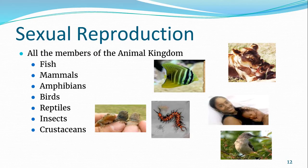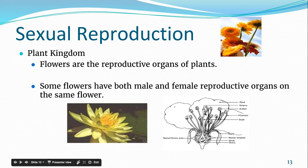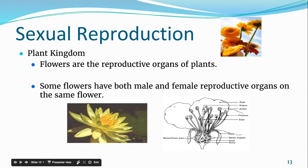All members of the animal kingdom have the ability to reproduce sexually. Some animals can also reproduce asexually, but sexual reproduction is much more common. Plants are another kingdom where you have both asexual and sexual reproduction. Any plant that flowers is reproducing sexually — the flowers are the reproductive structures, and they contain both the male and female organs. The female structure is the ovary with the ovule, where the egg is. The male structure includes the filament and anther, which contain the pollen — basically just plant sperm.